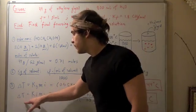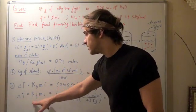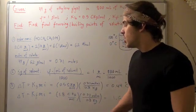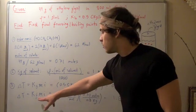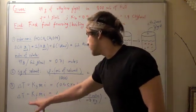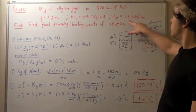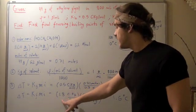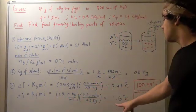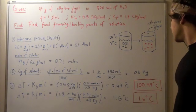Now, our change in freezing point is equal to our constant kf times molality times i. Once again, i is 1. Our molality stays the same. Our constant changes. Now, we plug in 1.8. We get 1.8 times our molality. And we get approximately 1.6 degrees Celsius.